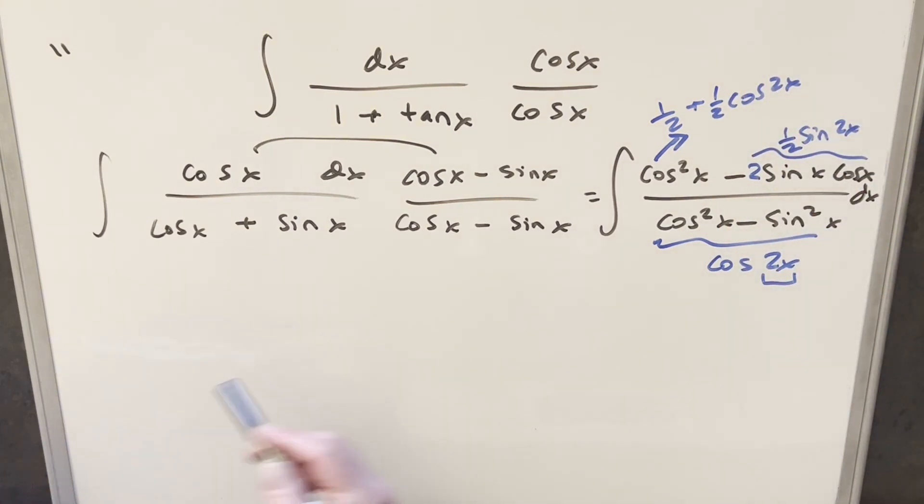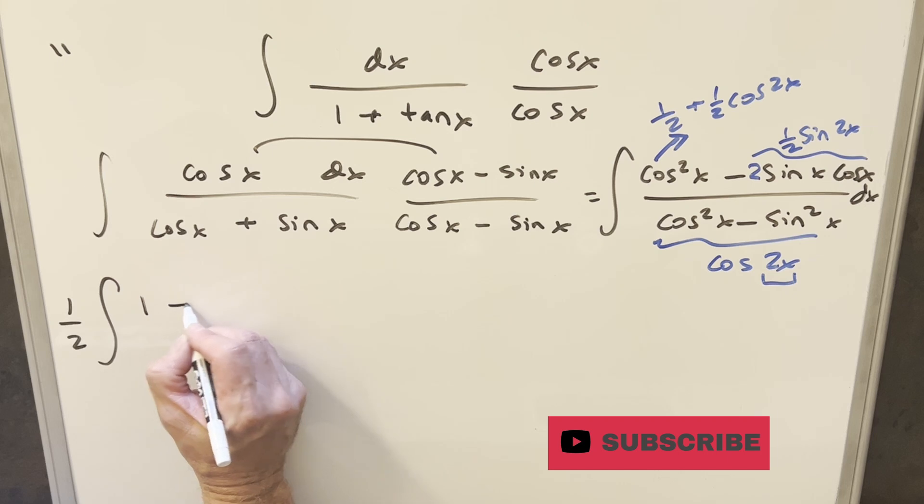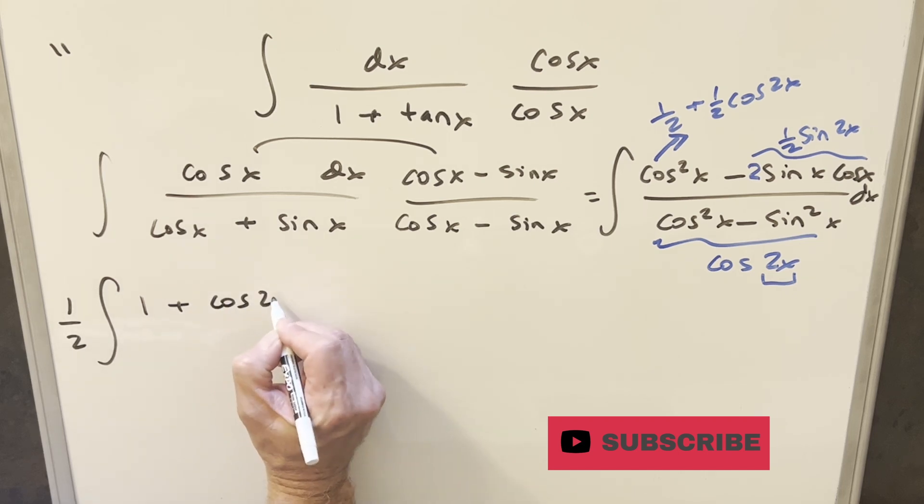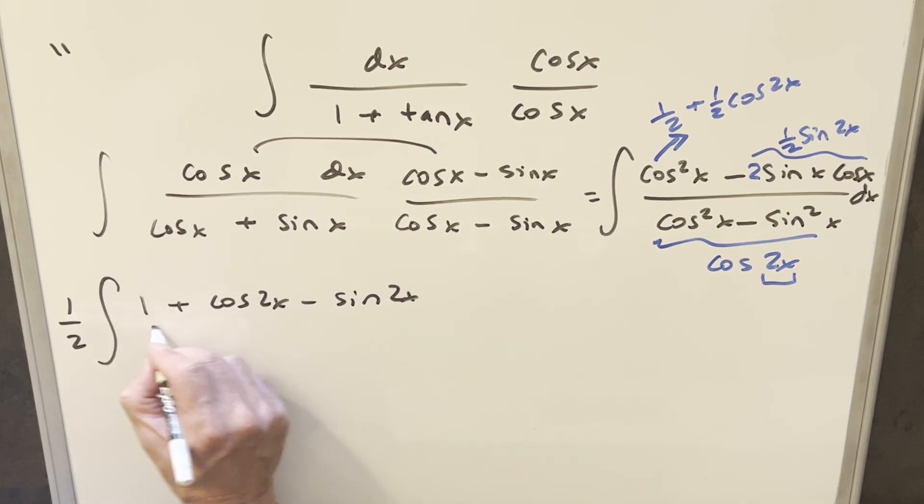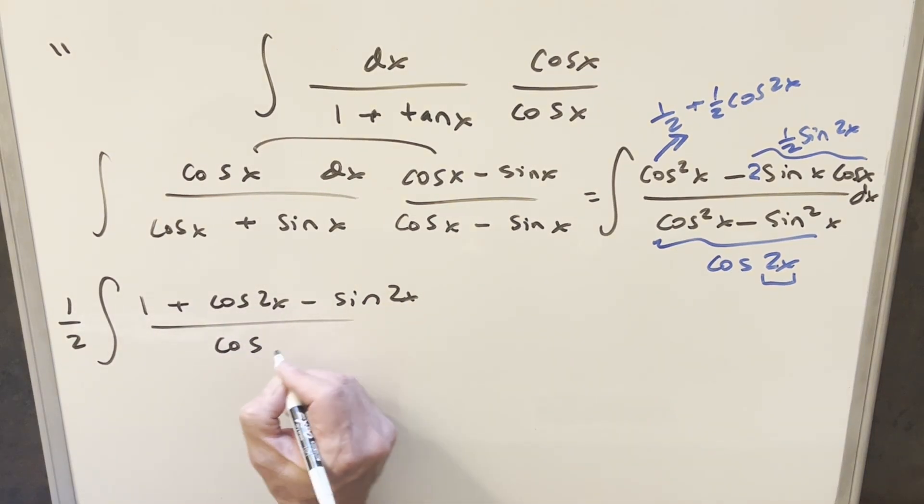So then let's rewrite all this and see what we have. But first, notice we have a half in everything in the numerator. So let me factor one half in front for all that stuff. Then in the numerator, we end up with one plus cosine 2x minus sine 2x. And then we just have this cosine 2x in the denominator.